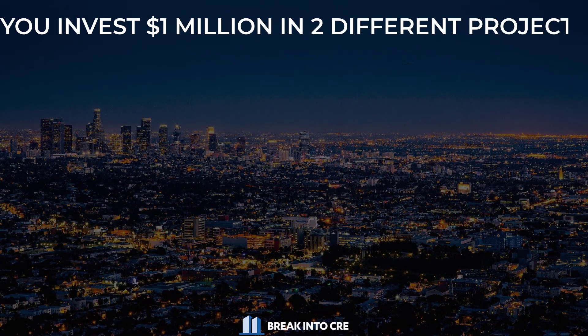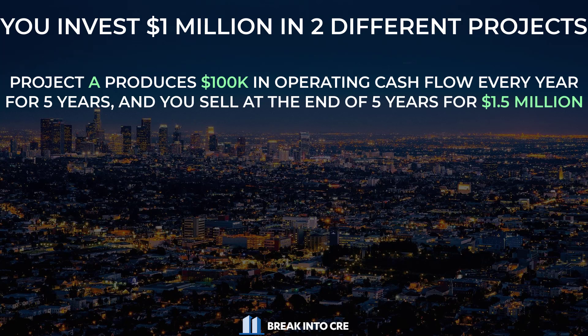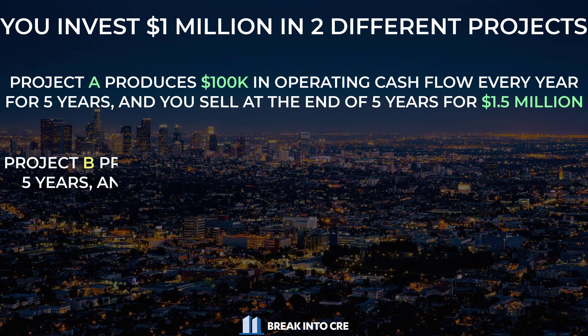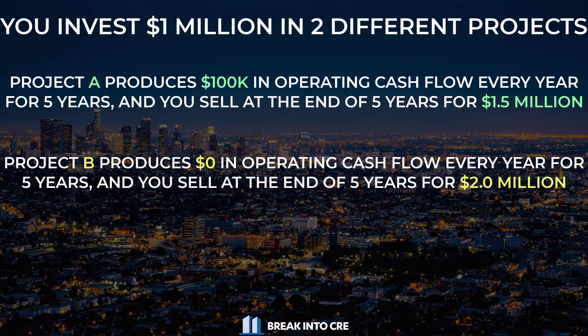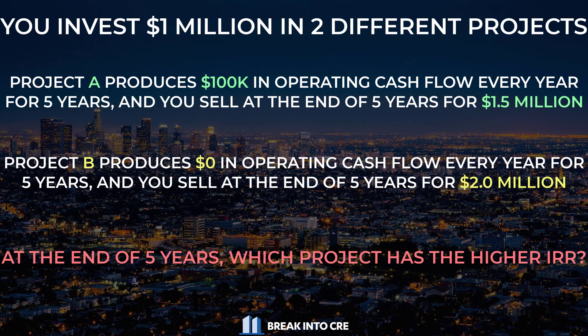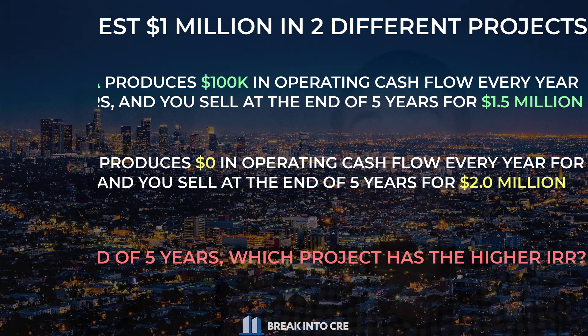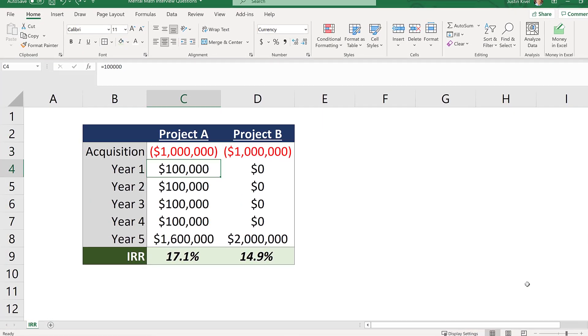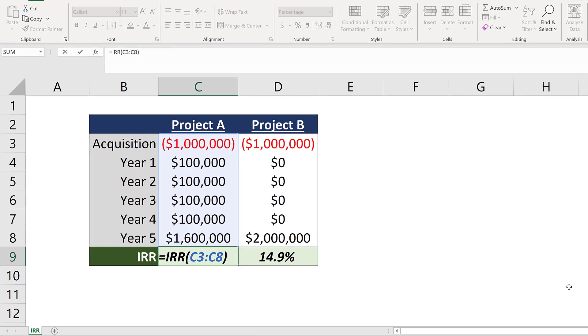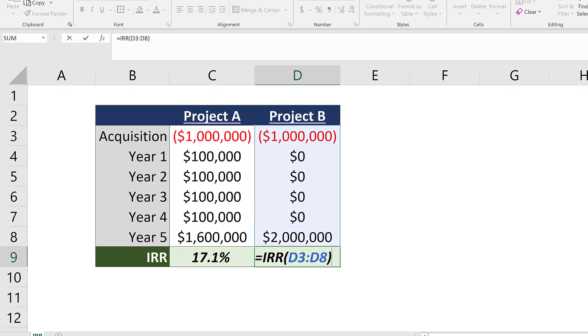A common question on the IRR might be something like this: you invest $1 million in two different projects. Project A produces $100,000 in operating cash flow every year for five years, and you sell the property at the end of year five for $1.5 million. Project B, on the other hand, produces $0 in operating cash flow every year for five years, but you sell at the end of year five for $2 million. So at the end of five years, which project has the higher IRR? The answer lies in the timing of the cash flows — Project A, the deal generating cash flow each and every year, wins out in this scenario, even with the sale value being 33% higher in Project B.